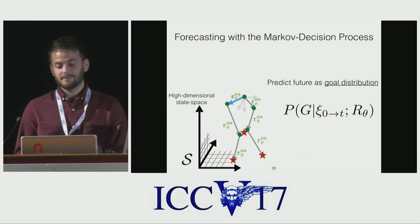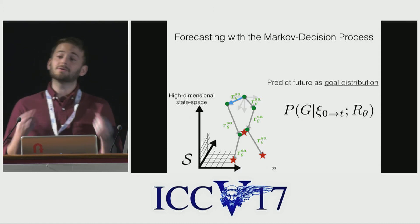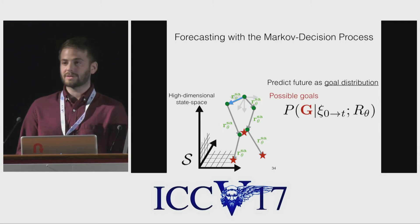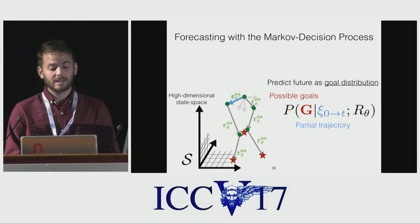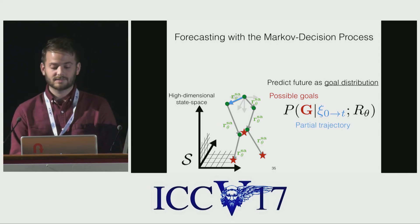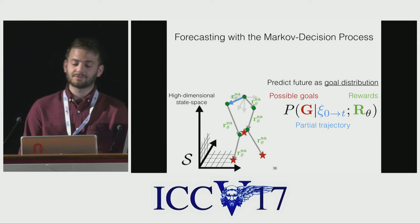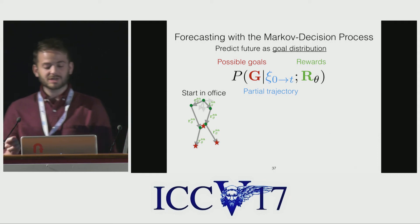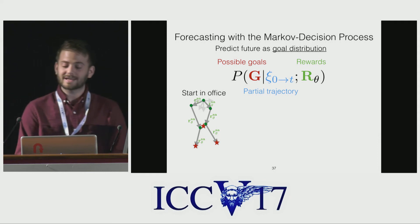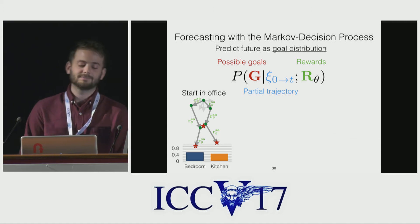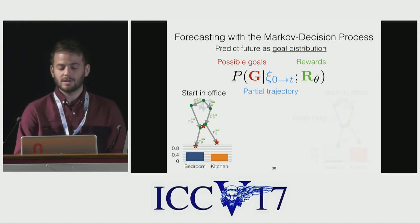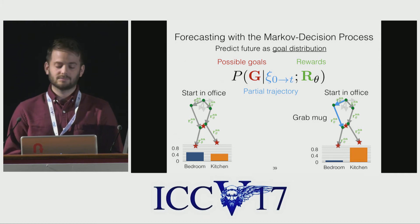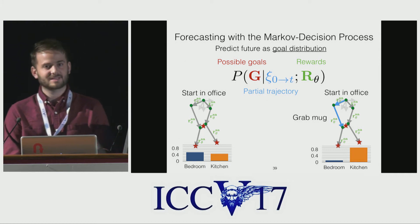Based on the MDP, the task is to continuously update a probability distribution over a person's future goals. Making this prediction requires our learned goals, a partial trajectory tracked through the state space, and our learned reward function. With no partial trajectory observed, our method may produce an uncertain goal distribution over the bedroom and kitchen. After the person grabs the mug, the trajectory grows and the prediction becomes more confident that the person's goal is in the kitchen.